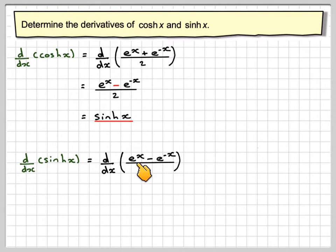If we differentiate e to the x, we get e to the x. If we differentiate this one, the minus will come down in front and combine with this one, make it plus e to the minus x divided by 2.